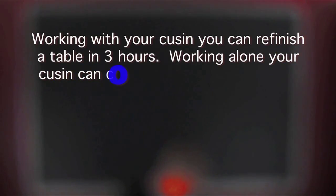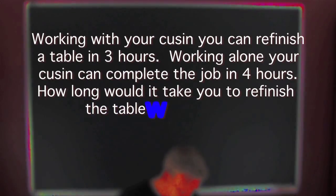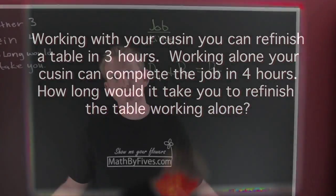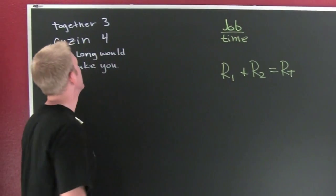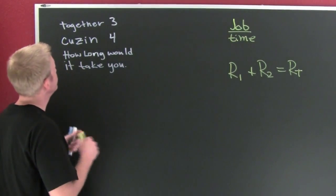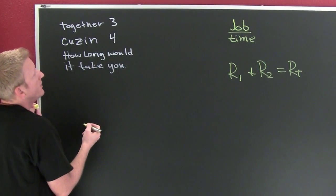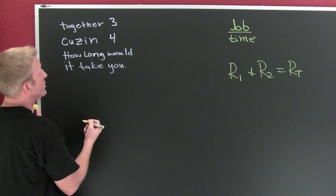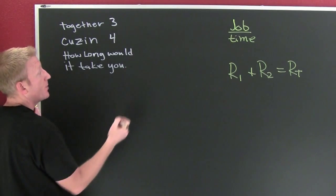So let's go to the cousin problem. Working with your cousin, you can refinish a table in three hours. Working alone, your cousin can complete the job in four hours. How long would it take you to refinish the table working alone? We're talking about the cousin. What we want to do is set up jobs per time. What's my job? My job is refinishing cabinets. Let's set up our rates.